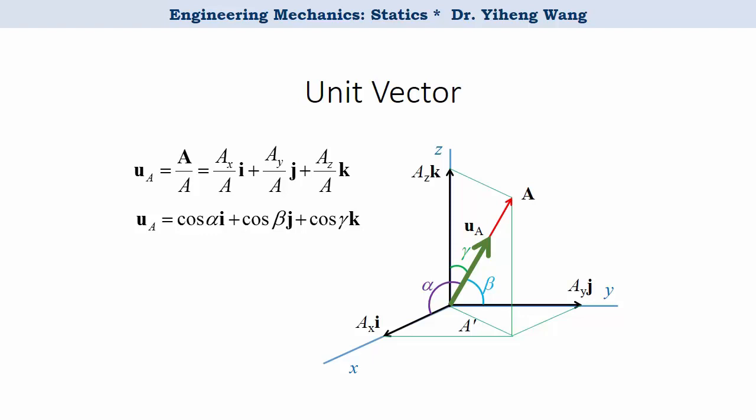And since the magnitude of unit vector is always 1, therefore we can come to the conclusion that the sum of the cosine squared of the three coordinate direction angles for any Cartesian vector must equal to 1.